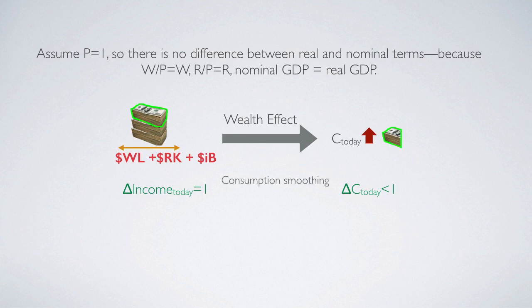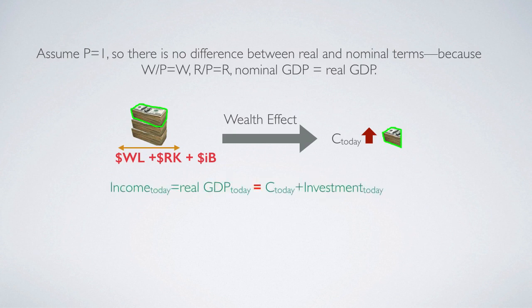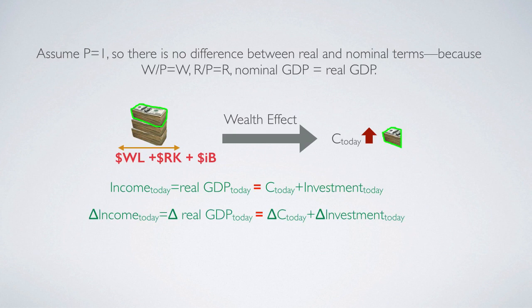Under consumption smoothing preference, when the household faces a temporary income change, he will not increase consumption as much as income. That's why consumption increases less than the income increase. Income in an economy represents real GDP, and it can be used for consumption or investment. When income — which represents real GDP — increases, it must equal the increase of consumption plus the remaining part used for investment. So if real GDP increased by one pile of cash but consumption only increased by less than one pile, part of the increment of output has been saved and reinvested.